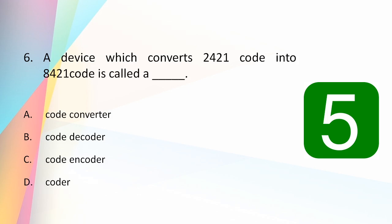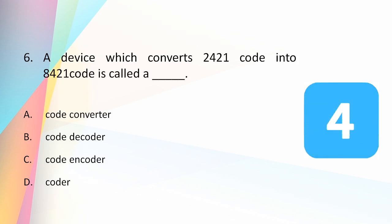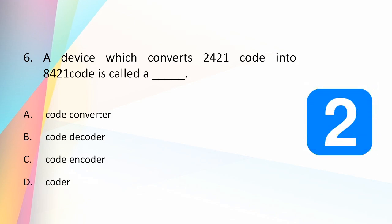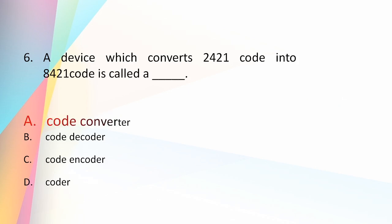A device which converts 2421 code into 8421 code is called: a code converter, code decoder, code encoder, or coder? The answer is code converter. Here, 2421 is a weighted self-complemented code and 8421 is a weighted code. A device which converts from one particular code to another code is called a code converter.